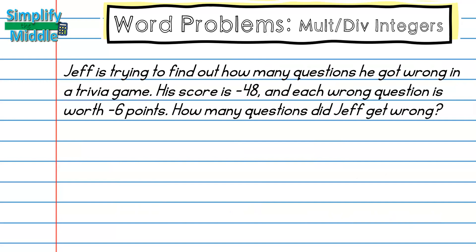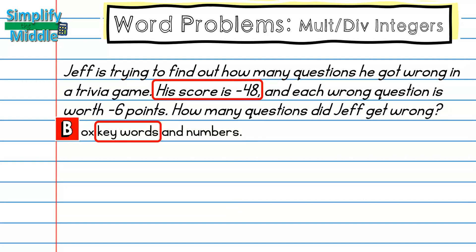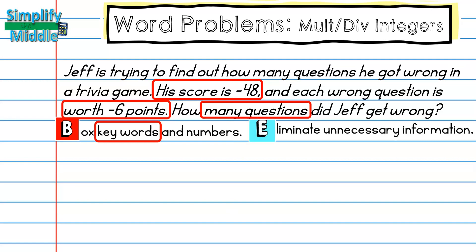In the last example, Jeff is trying to find out how many questions he got wrong in a trivia game. His score is negative 48, and each wrong question is worth negative six points. How many questions did Jeff get wrong? I'll box the keywords: score of negative 48, wrong questions worth negative six, how many questions. This tells me the answer cannot be negative, because we can't have a negative number of questions.